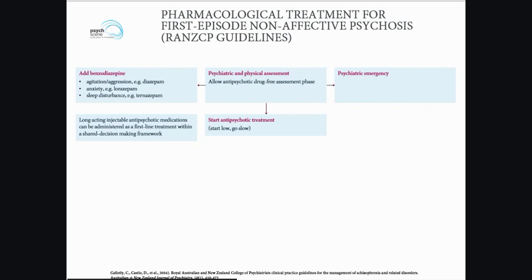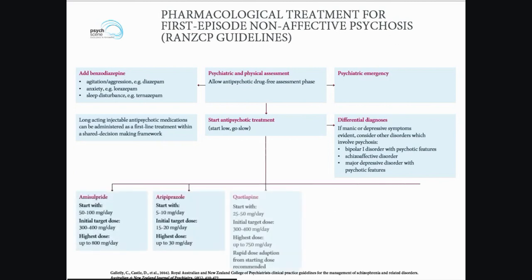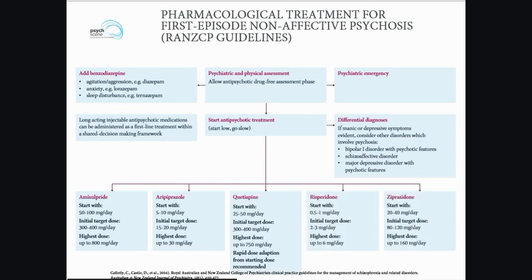After a while, consider starting antipsychotic treatment — start low, go slow. In some cases, long-acting injectables may be appropriate and can be administered as a first-line treatment within a shared decision-making framework, discussing risks and benefits with the patient. Consider differential diagnosis, as affective symptoms may point to bipolar affective disorder with psychotic features or schizoaffective disorder, mainly because a mood stabiliser may be required as an adjunct to antipsychotic treatment.